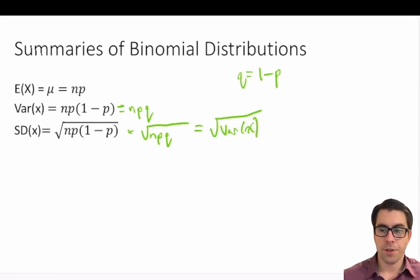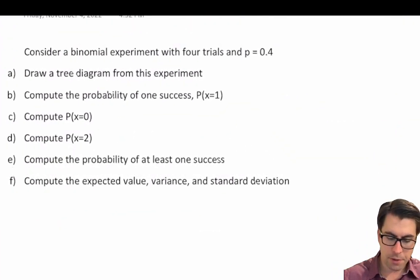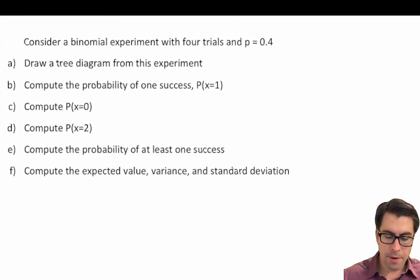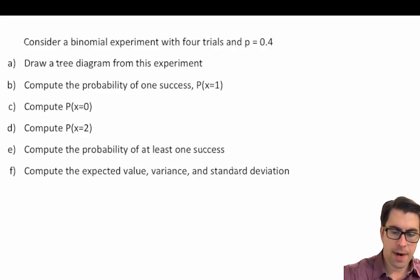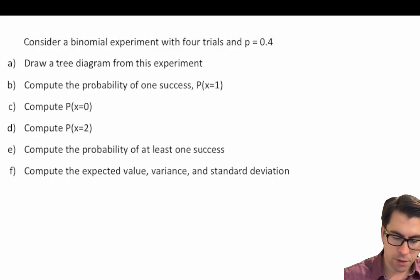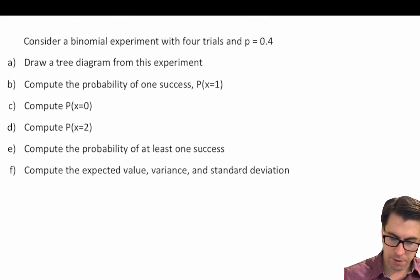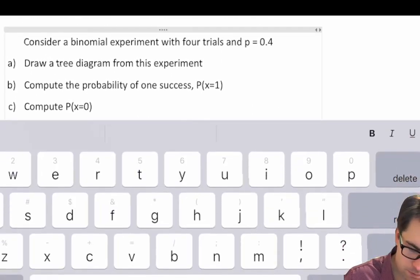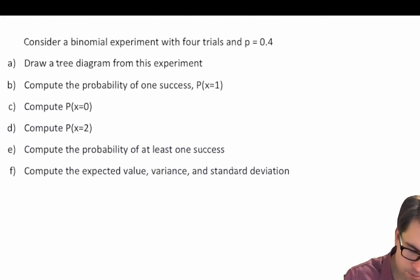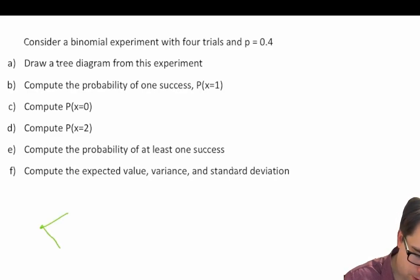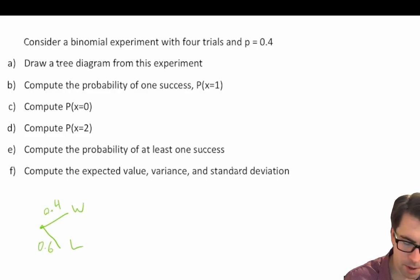The best way to learn is to dive into a practice problem. Let's consider a binomial experiment with four trials and p equal to 0.4. We have several things to do, starting with drawing a tree diagram. We have a win and a loss — the probability of a win (success) is 0.4 and the probability of a loss is 0.6. That's one trial.